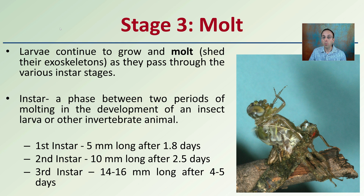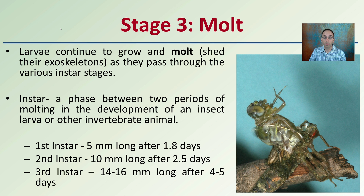An instar is a phase between two periods of molting in the development of an insect larva or other invertebrate organism. The first instar, captured and preserved, is about 5 millimeters long and occurs after approximately 1.8 days. The second instar progresses to about 10 millimeters long and occurs after about two and a half days. The third instar reaches about 14 to 16 millimeters long, occurring after four to five days.